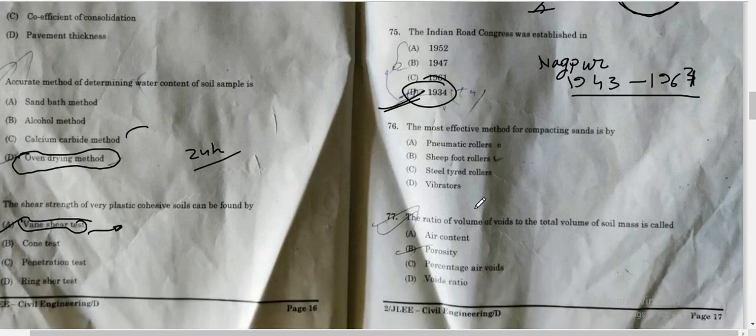Question number 76: what is the most effective method for compacting sand? Which method is used for compacting sand? The correct answer is vibratory roller. We use vibratory machines or vibratory rollers for sand or gravel. Vibratory creates vibration, and because of that vibration, the sand gets compacted.